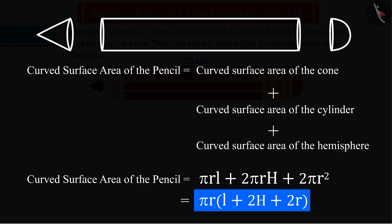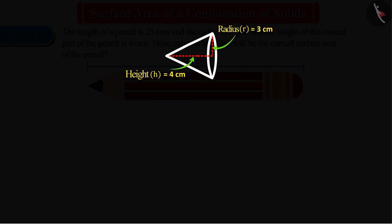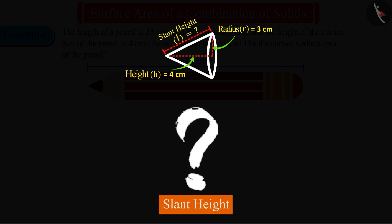We know the height and the radius of the cone, but for the surface area we need to find the measurement of the slant height L of the cone. So can you tell what will be the slant height of the cone?